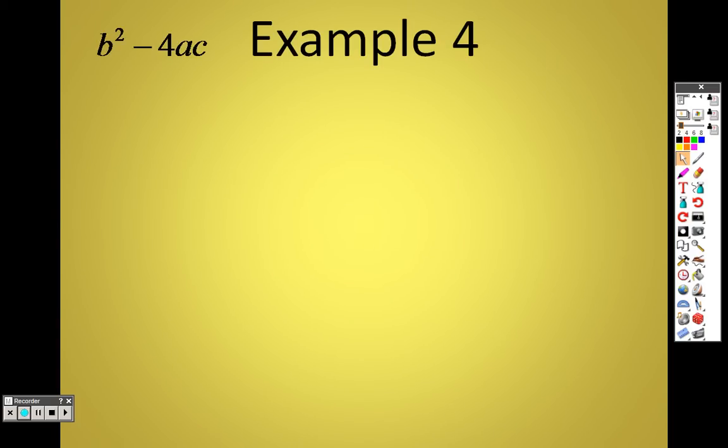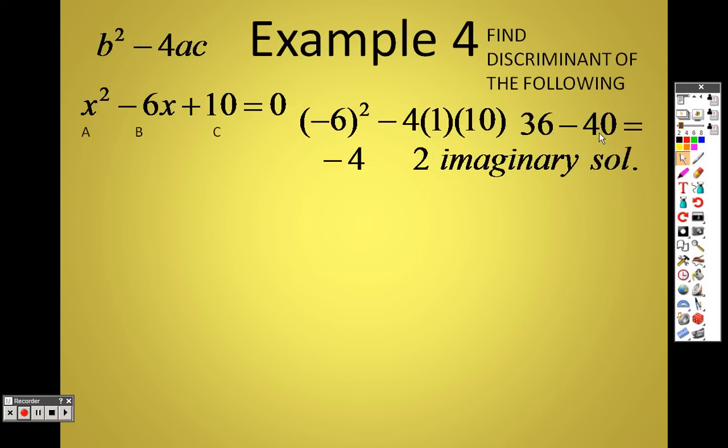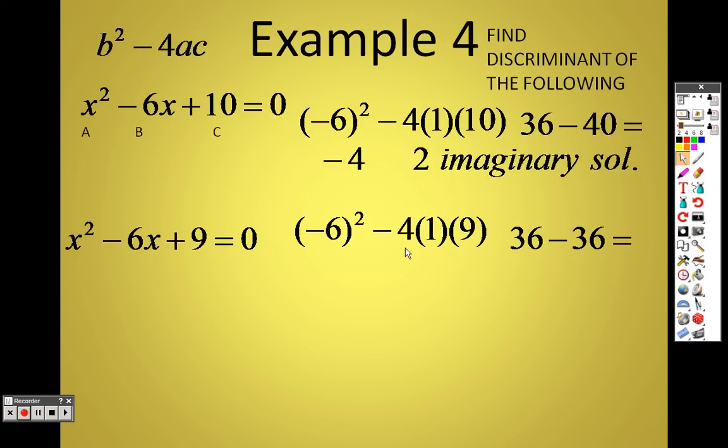Example: b squared minus 4ac. So find the discriminant. So you have a, b, and c. b is negative 6, we put that in there. a is 1, c is 10, so I plug it in. Negative 6 squared is 36. Negative 4 times 1 times 10 is 40. So you end up getting a negative 4. Since it's a negative number, we have two imaginary solutions. We have two imaginary solutions because it's less than 0. It's negative. We plug this one in. b squared minus 4 times a, which is 1, times c, which is 9. We end up with 36 minus 36, which is 0. 0 means there's only one answer to the problem, and that's a real answer.